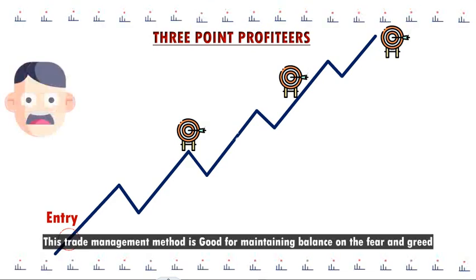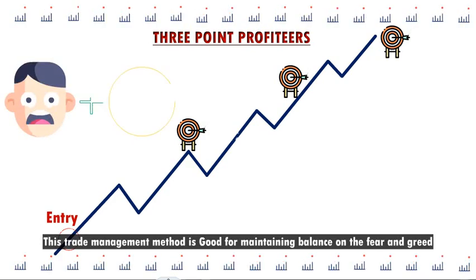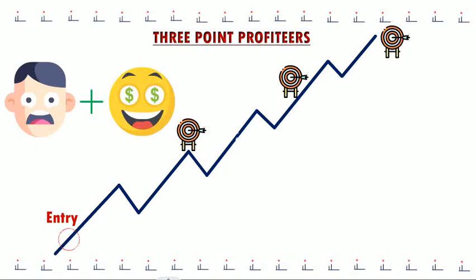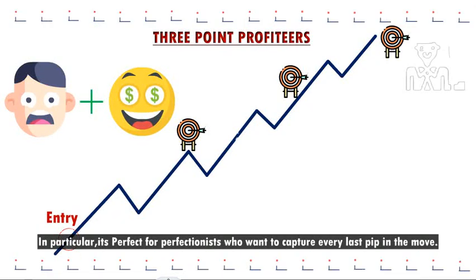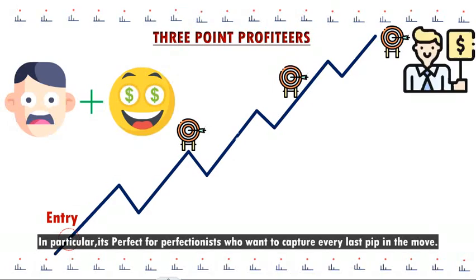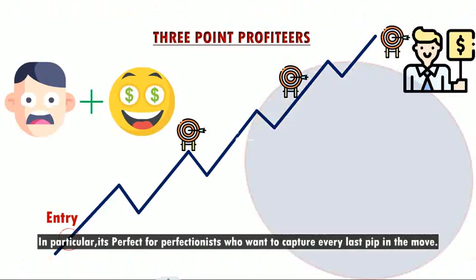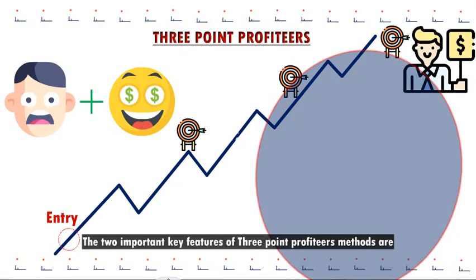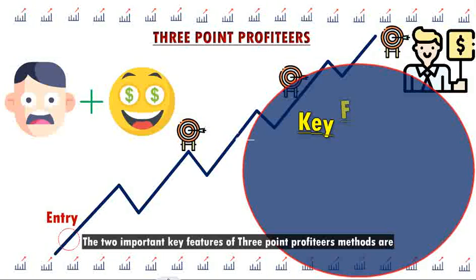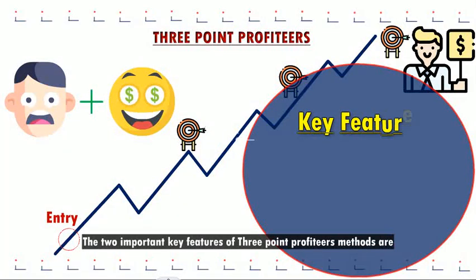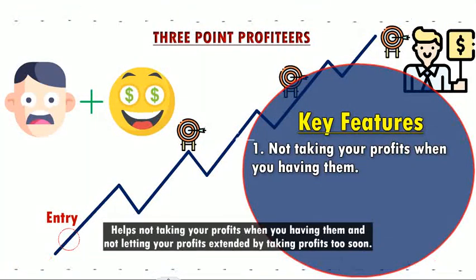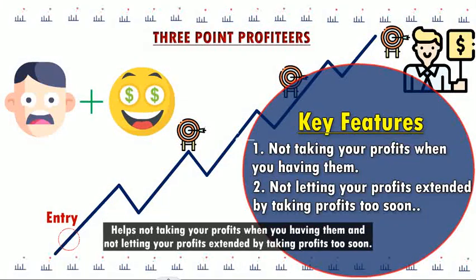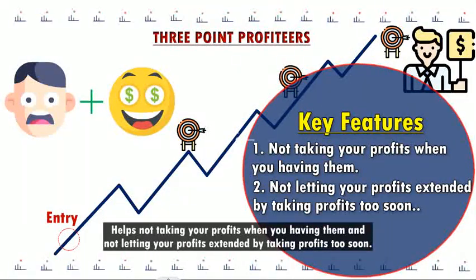This trade management method is good for maintaining balance between fear and greed. In particular, it's perfect for perfectionists who want to capture every last pip in the move. The two important key features of the three-point profiteers method are: it helps avoid not taking your profits when you're having them, and not letting your profits slip by taking profits too soon.